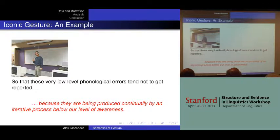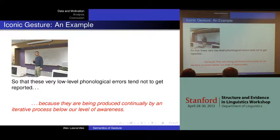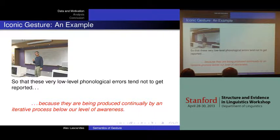There are two things I want to note about this paraphrase. One is I've used the word 'because,' and the other is that it's introducing entities that aren't explicitly expressed in the speech, but that are nevertheless related to entities that are expressed in the speech — mainly the stuff that causes minor phonological errors.